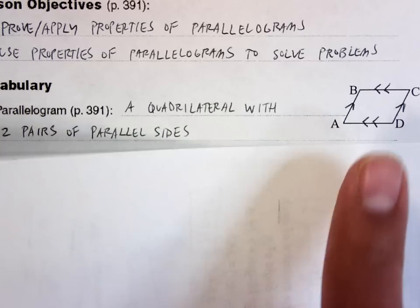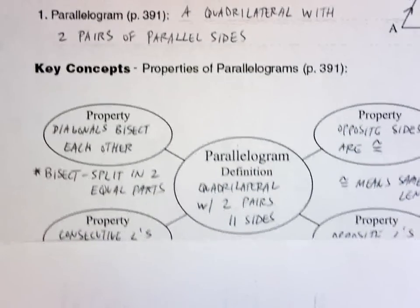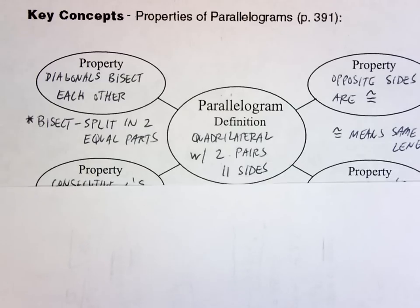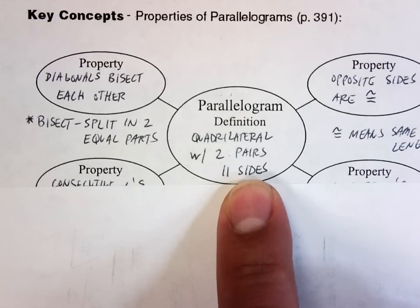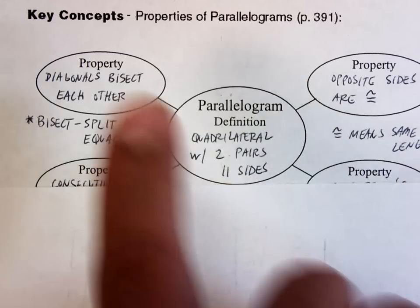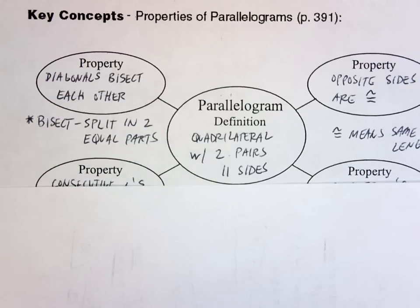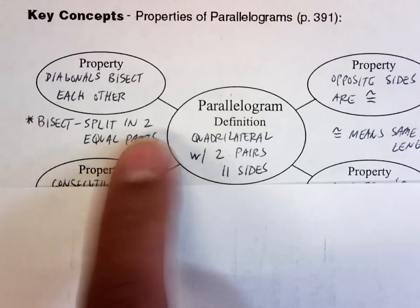Now there's properties that we have to remember. Let me scroll down, try to move this into the middle. This middle part starts out with parallelogram definition again, quadrilateral with two pairs of parallel sides. Then there's four properties that we have to remember. Property number one: diagonals bisect each other. When I draw in my diagonals of my parallelogram, they will bisect each other. If we forget, bisect means to split in two equal parts.